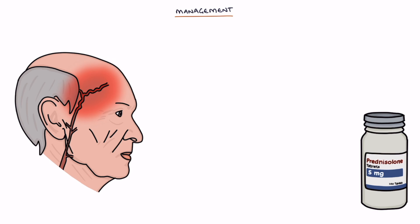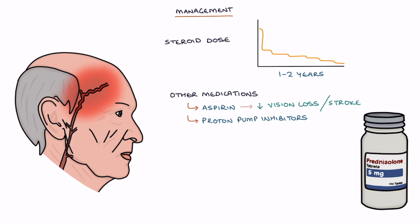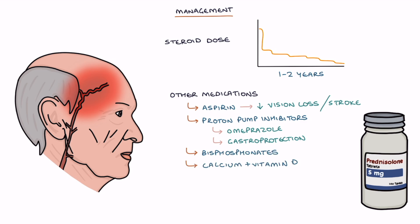Once the diagnosis is confirmed and the condition is controlled, the steroid dose is slowly weaned over 1–2 years. Other medications include aspirin to decrease the risk of vision loss or stroke, proton pump inhibitors like omeprazole for gastroprotection while taking steroids, and bisphosphonates with calcium and vitamin D supplements for bone protection while taking steroids.